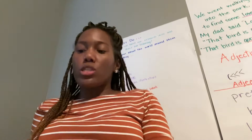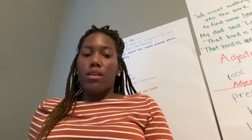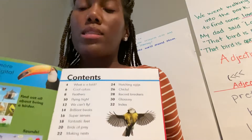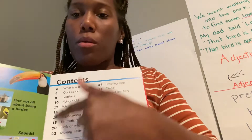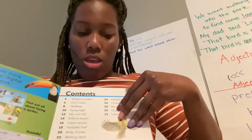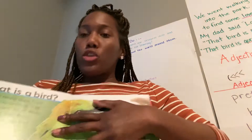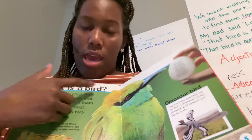Today, we're going to look closely at pages four and five. We're going to open up our book. There's a picture of a bird. Here's our table of contents. Our table of contents is going to tell us where we can find what we're looking for. We're looking for page four. Page four — it says, what is a bird?